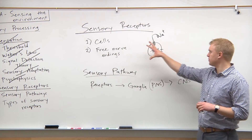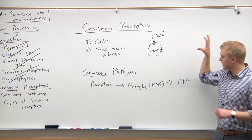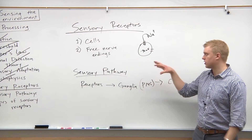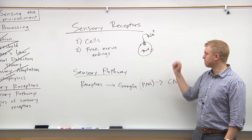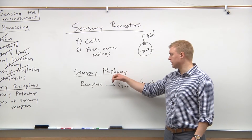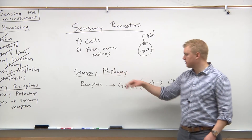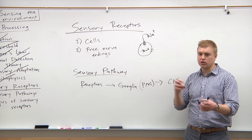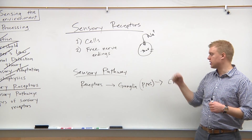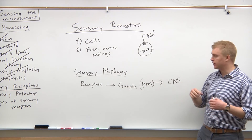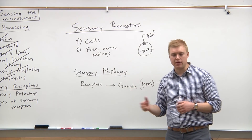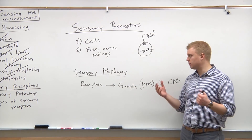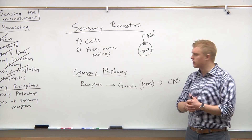To recap: sensory receptors are stimulated by different kinds of energy, not by neurotransmitters. The pathway works like any other cell that experiences action potentials — the dendrites are disturbed, ion-gated channels open, and action potentials propagate via that method. That's how your receptors work.